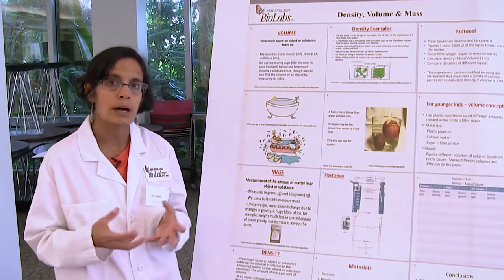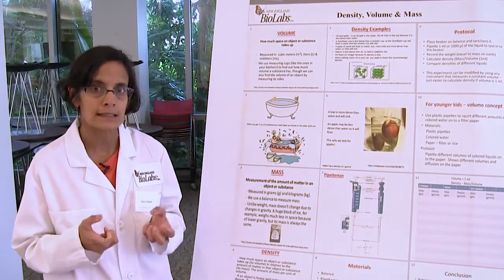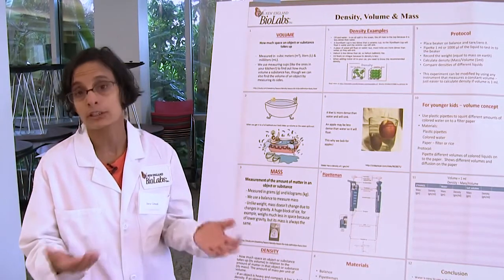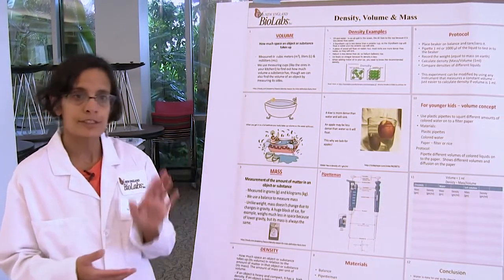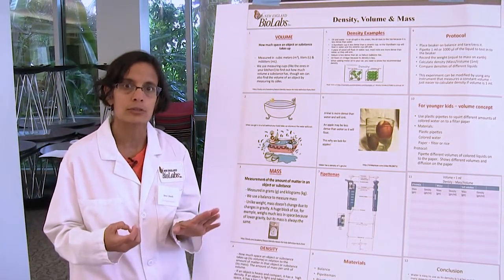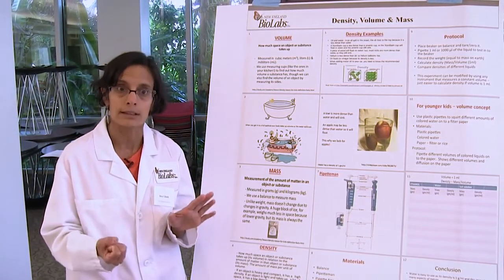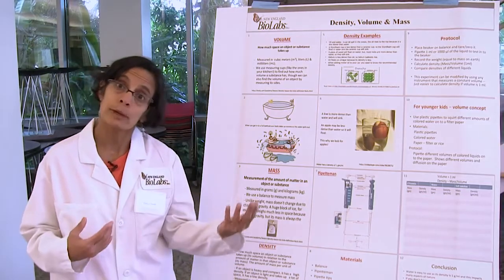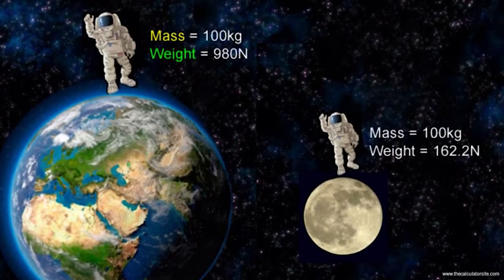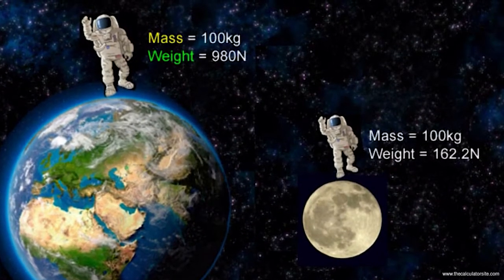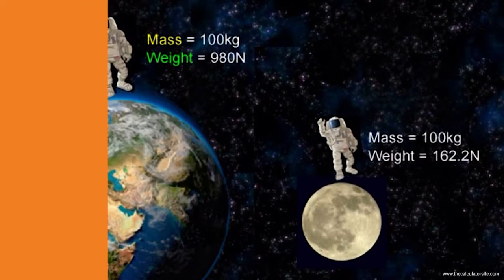The second concept is mass, which is the amount of matter in a substance. When you stand on a weighing scale you're measuring your weight. The difference between weight and mass is that weight takes into account gravity. On earth, mass and weight are the same, but if you went to the moon your mass would be the same while your weight would change because gravitational pull is less.